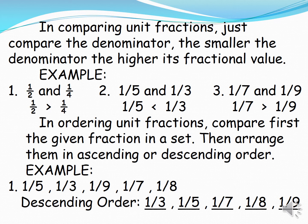Number three: one seventh and one ninth. So one seventh is greater than one ninth. In ordering unit fractions, compare first the given fractions in a set, then arrange them in ascending or descending order. Example number one: we have the set of fractions one fifth, one third, one ninth, one seventh, one eighth. Arranged in descending order, it becomes: one third, one fifth, one seventh, one eighth, one ninth.